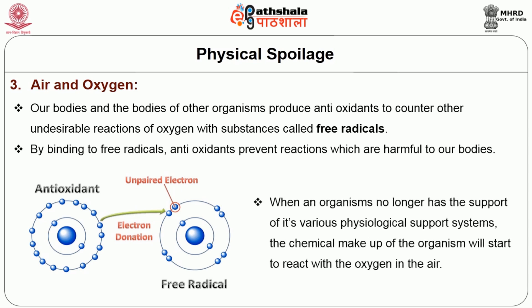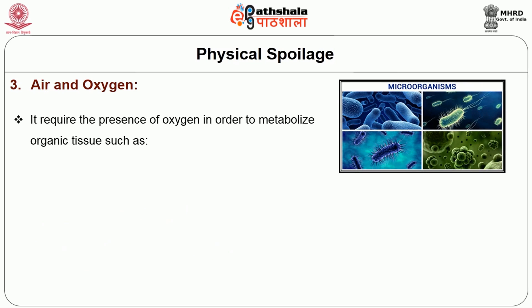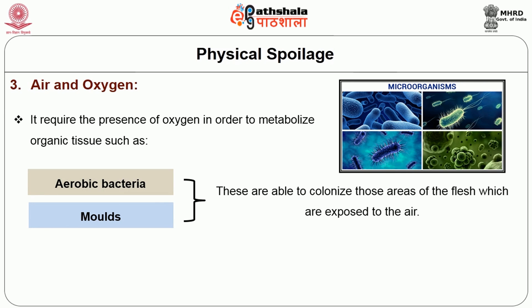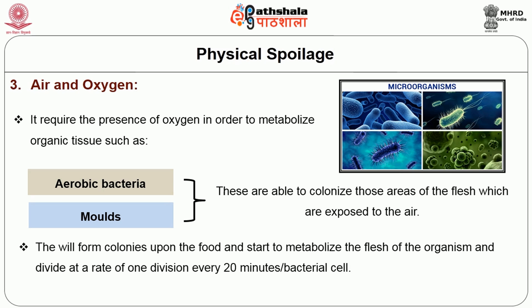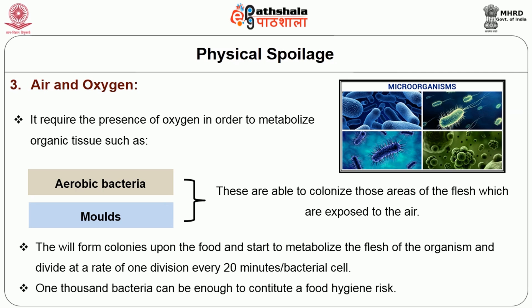When an organism no longer has the support of its various physiological support systems, the chemical makeup of the organism will start to react with the oxygen in the air. Microorganisms which require the presence of oxygen in order to metabolize organic tissues — such as aerobic bacteria and molds — are able to colonize those areas of the flesh which are exposed to the air. These will form colonies upon the food and start to metabolize the flesh, dividing at a rate of one division every 20 minutes per bacterial cell. In some cases, as few as 1000 bacteria can be enough to constitute a food hygiene risk.